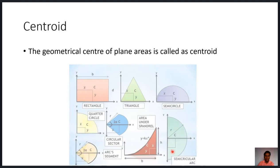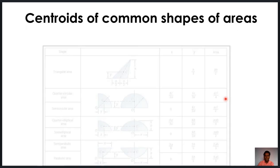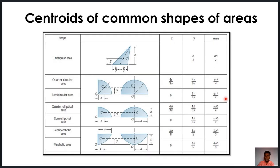We define centroid as the geometrical center of plane areas. For regular shapes like a rectangle, triangle, circle, or semicircle, we can easily locate the positions of the centroid. These are the centroids of some common shapes: triangle, circle, semicircle, quarter circle, ellipse, semi-elliptical area, parabolic area, and semi-parabolic area.